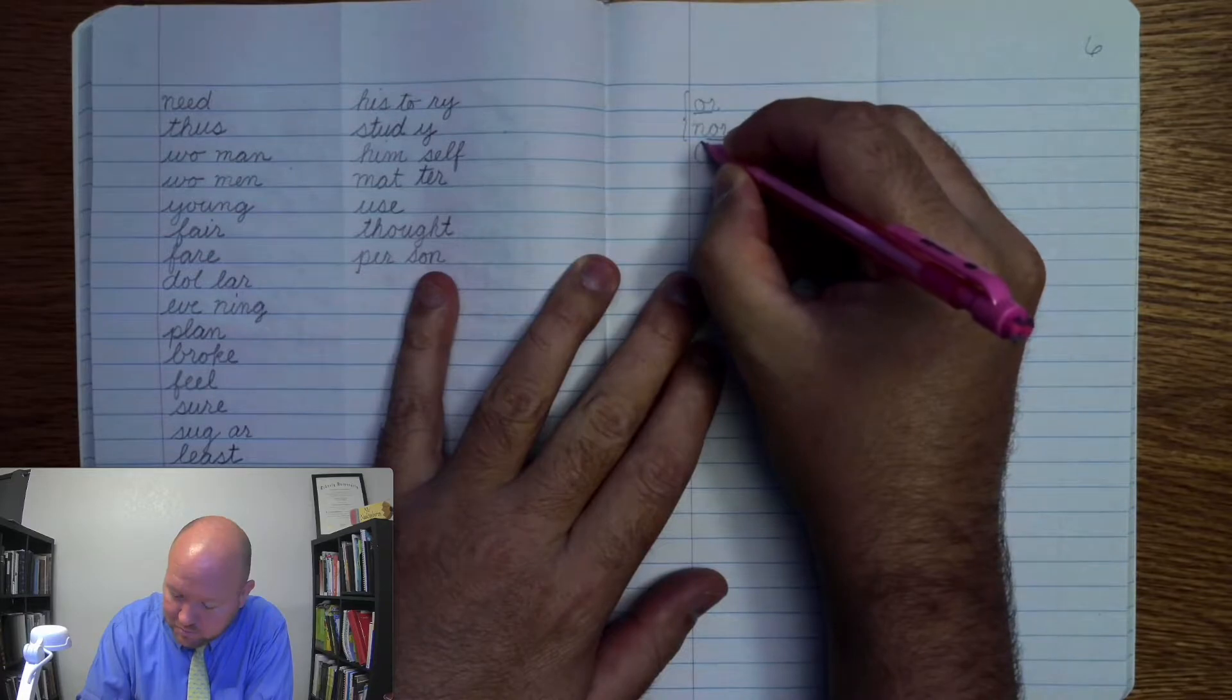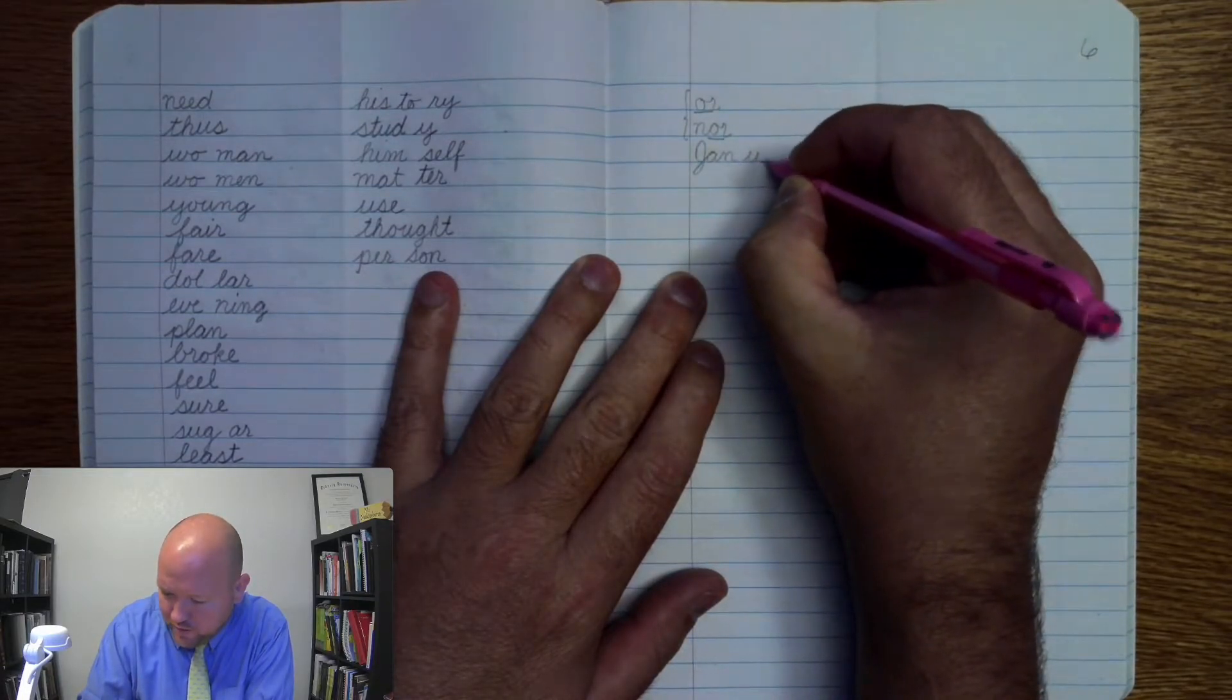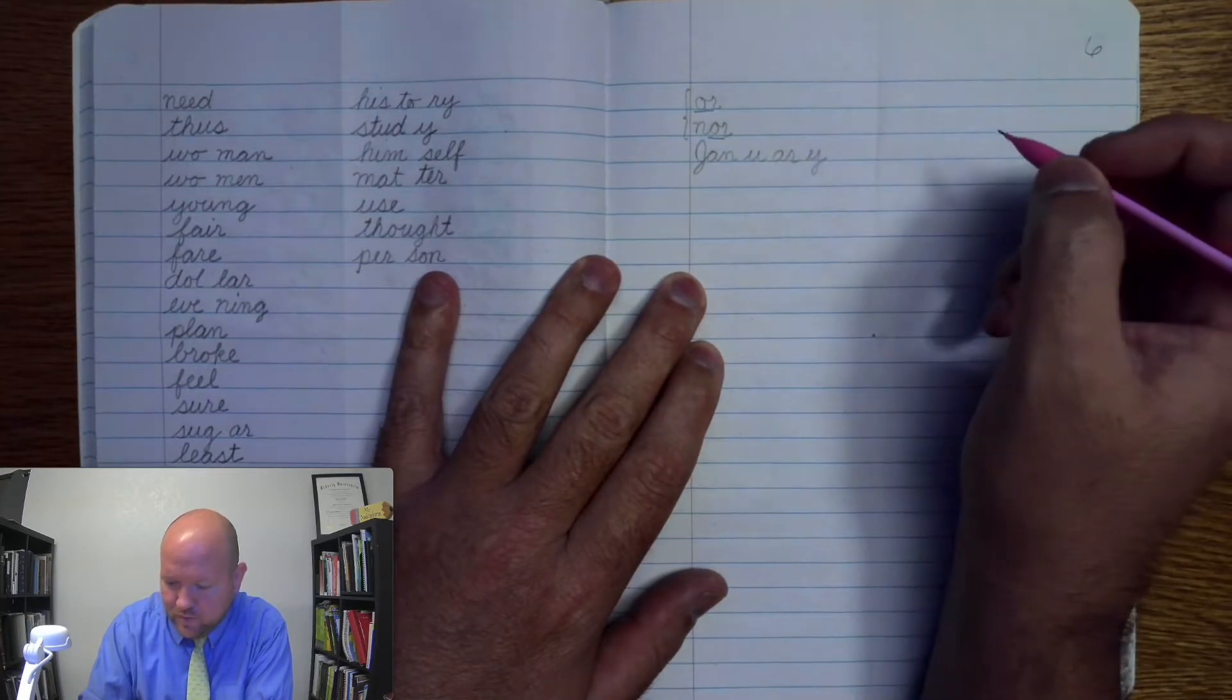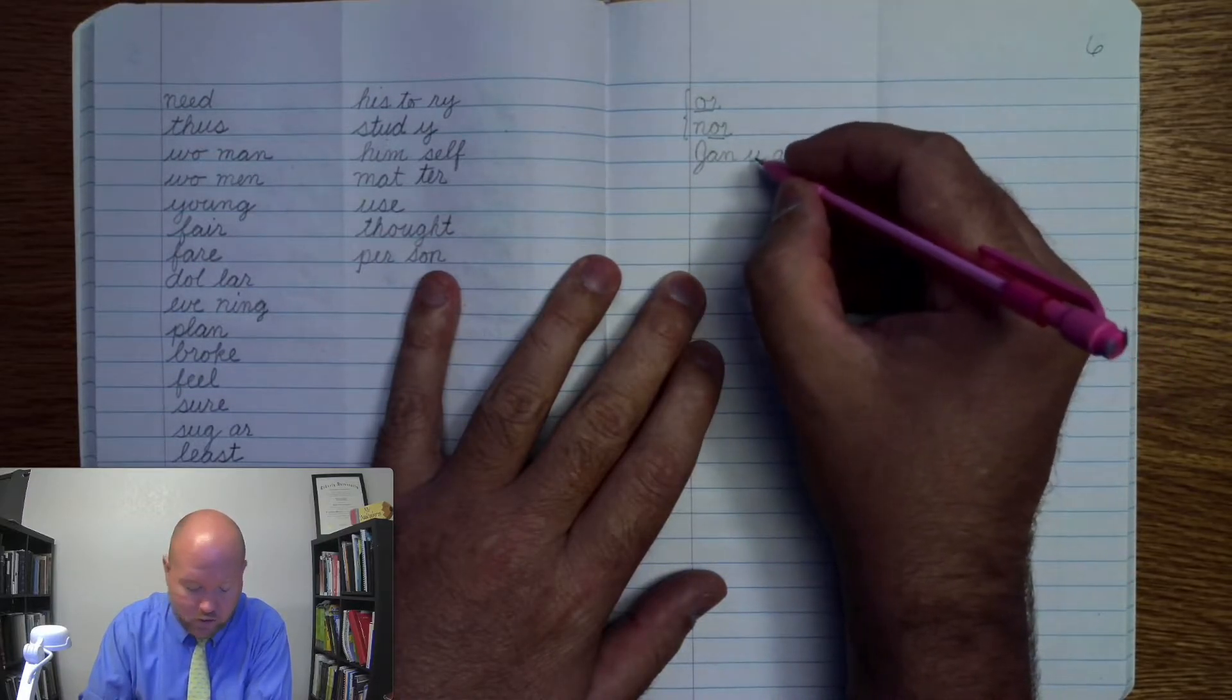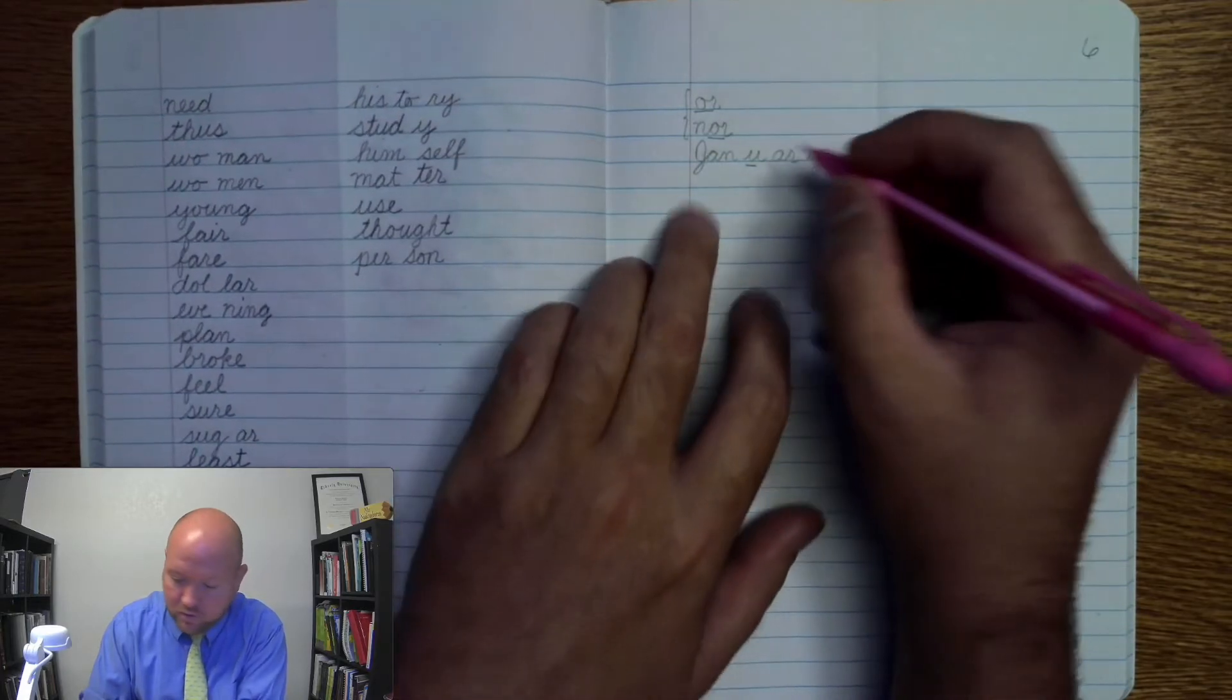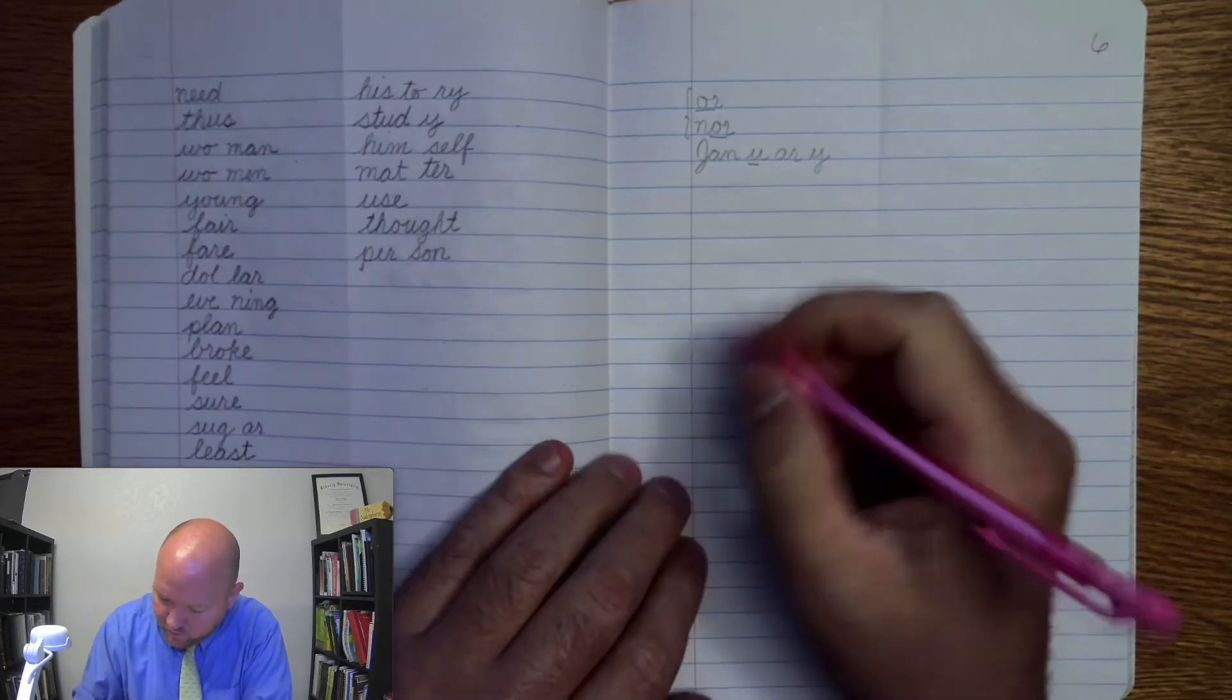Jan. Capitalized because it's a month. Jan. You. Are. E. Okay. Markings. J. A. N. You. Once. And that's, oh, I forgot. And let's do our rules. Let's just move this down.